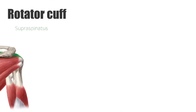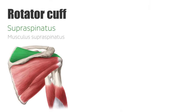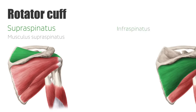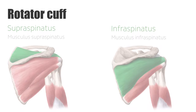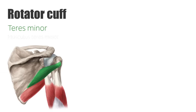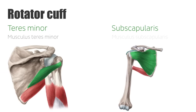The rotator cuff consists of the four following muscles: the supraspinatus, the infraspinatus, the teres minor, and the subscapularis. The main function of this group of muscles is to stabilize and center the humeral head in the joint socket, called the glenoid cavity.